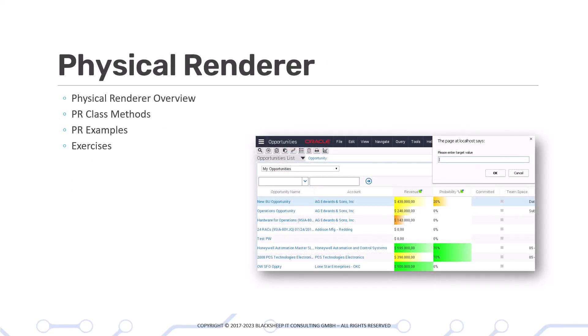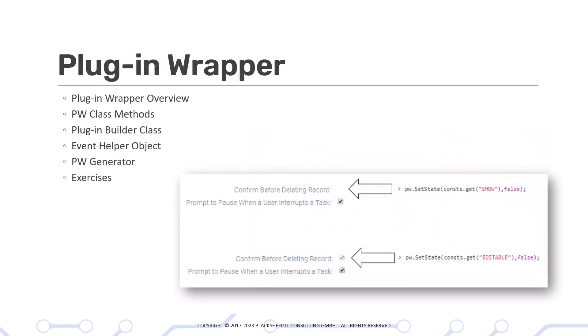The physical renderer comes next with a lot of details that will allow you to make stunning visual representations of data provided by the presentation model in your Siebel views and applets. Plugin Wrapper is a very special type of physical renderer for types of controls such as checkboxes, and you will learn all about this very important class of Open UI customization.